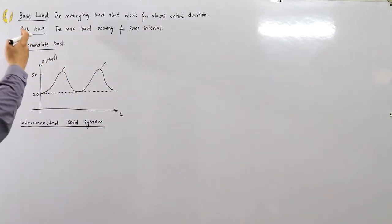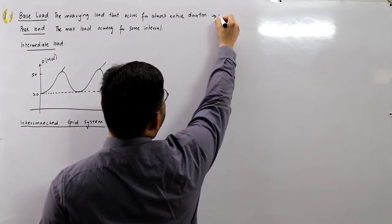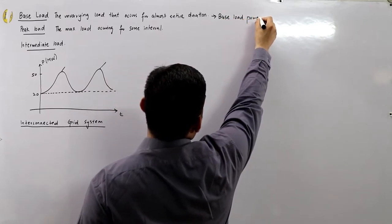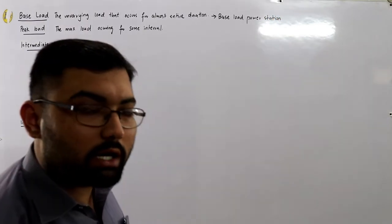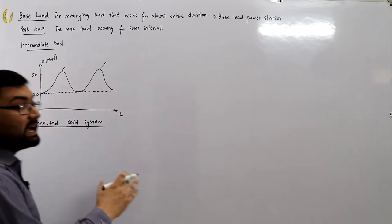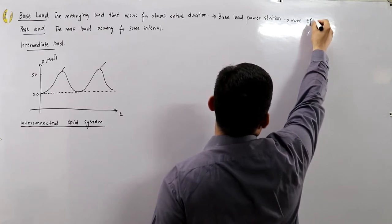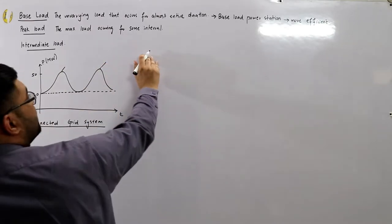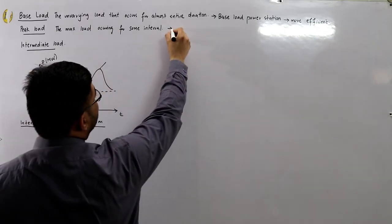The base load power station has to be efficient because it operates for more time and needs a higher working capacity. Similarly, the power station used to supply the peak load — such as 50 megawatts — is called the peak load power station, and it is relatively less efficient because it operates for only a small percent of the time.